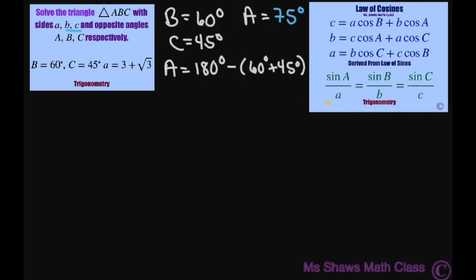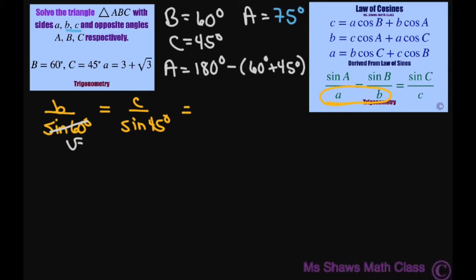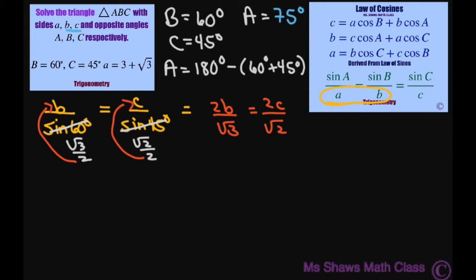Let's use the law of sines. I'm going to flip it around since that's what we're looking for and write it as: b over sine of 60 degrees equals c over sine of 45 degrees. Sine of 60 degrees is square root of 3 divided by 2, and sine of 45 degrees is square root of 2 divided by 2. So flipping this up gives us 2b divided by square root of 3 equals 2c divided by square root of 2. That gives us square root of 2 · b equals square root of 3 · c — the 2's cancel when you cross multiply.